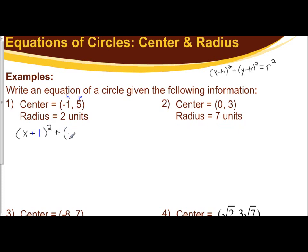And then I have plus y minus my k value, where my k value is 5. So I have y minus 5, the quantity squared, equals our radius squared. 2 is our r, so I would square 2. The equation is x plus 1, the quantity squared, plus y minus 5, the quantity squared, equals 4. Because 2 squared is 4. And there is our equation.